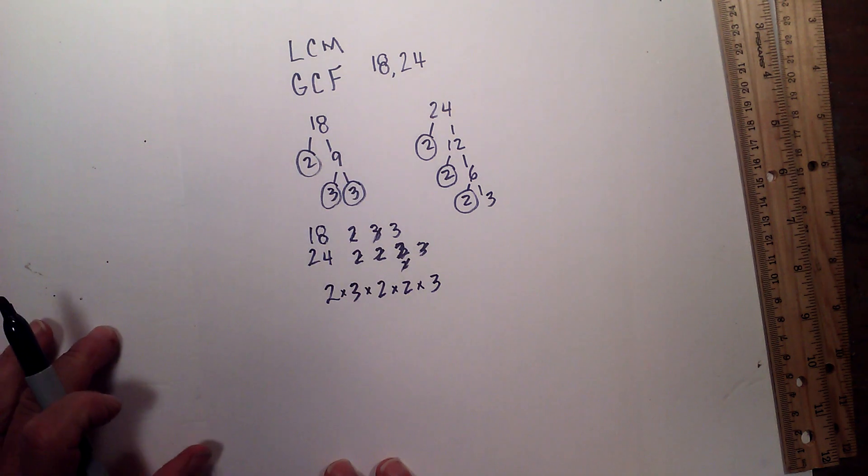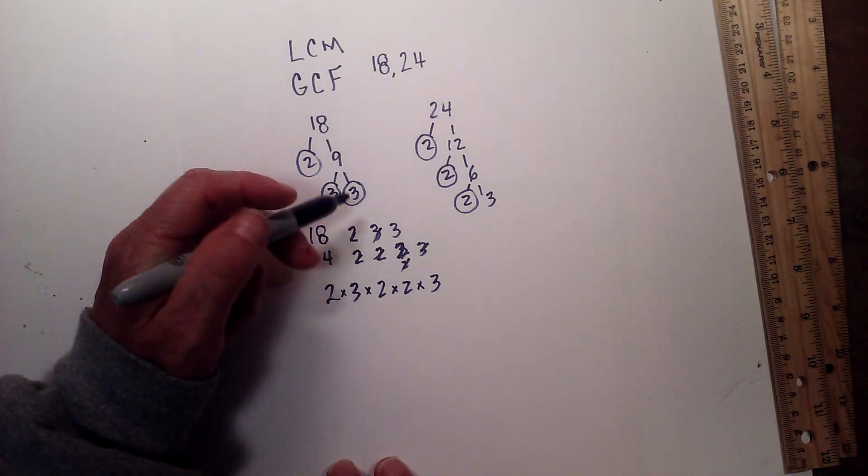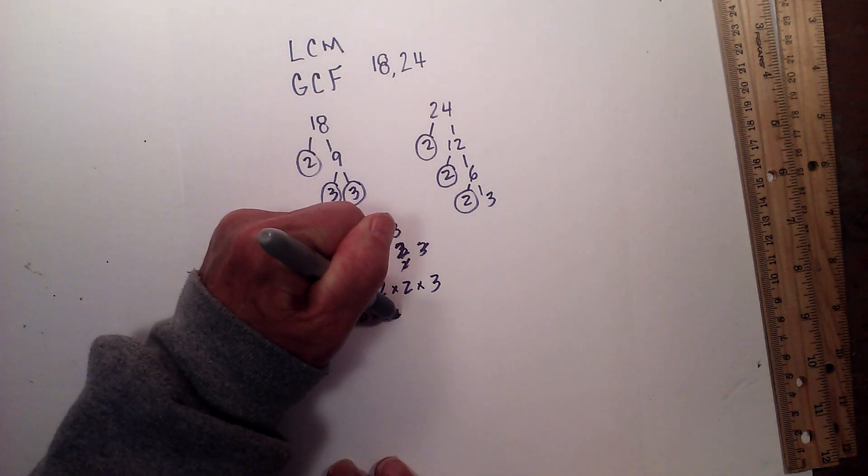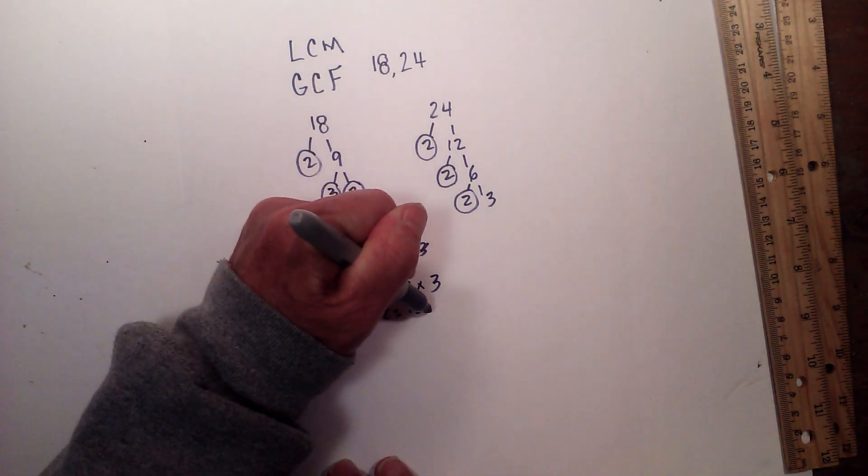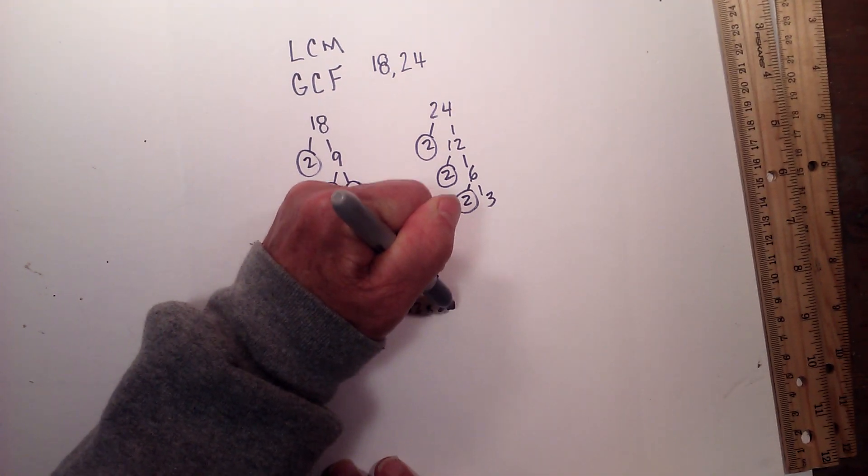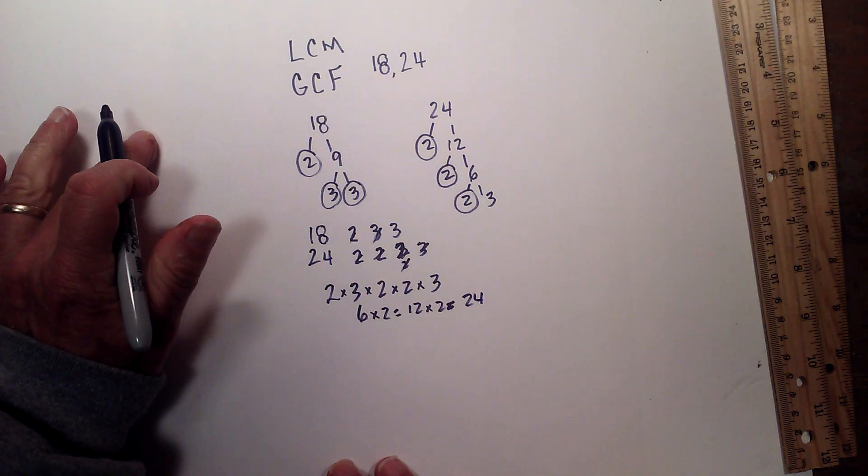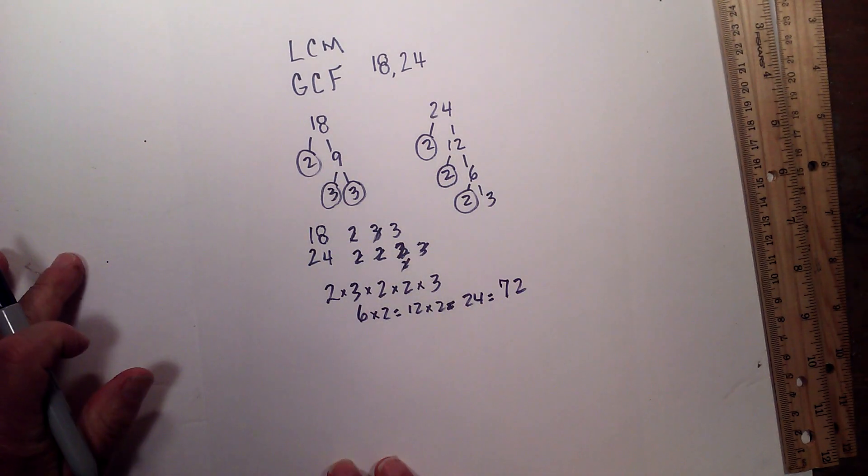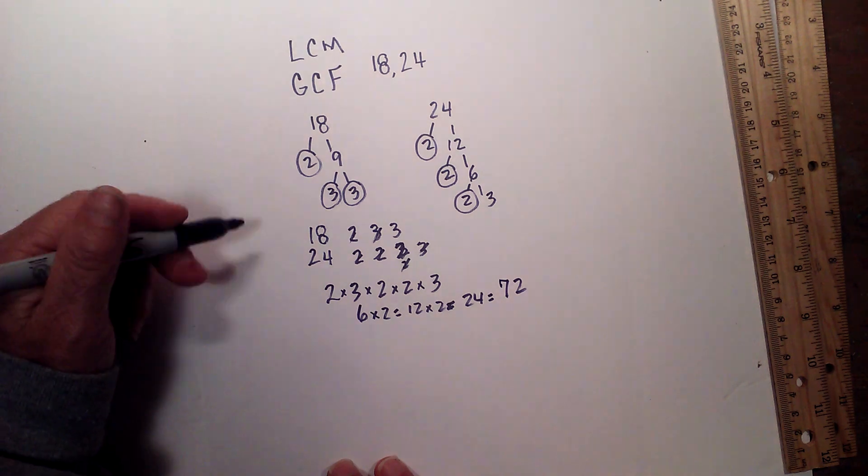So now let's just multiply these together: 2 times 3 is 6, 6 times 2 is 12, 12 times 2 is 24, and then 24 times 3 is equal to 72. So the LCM of 18 and 24 is 72.